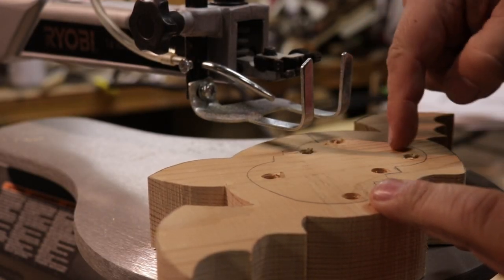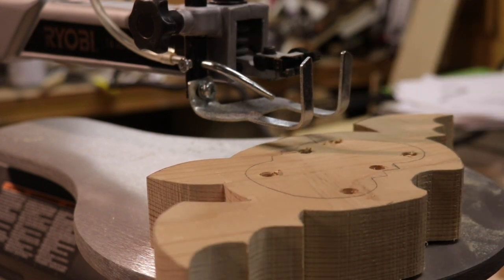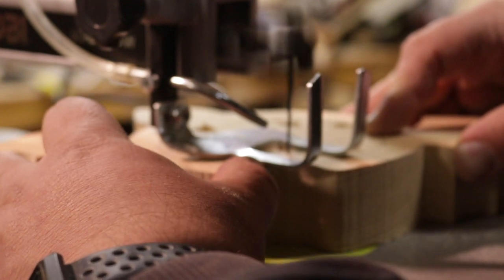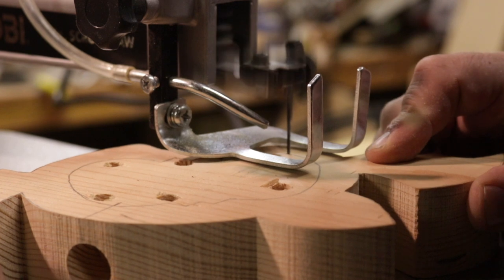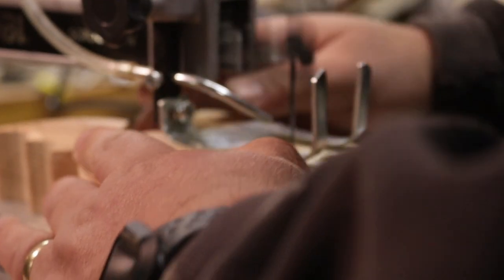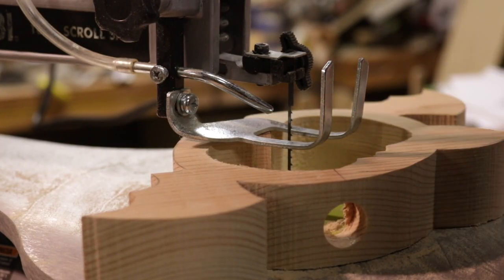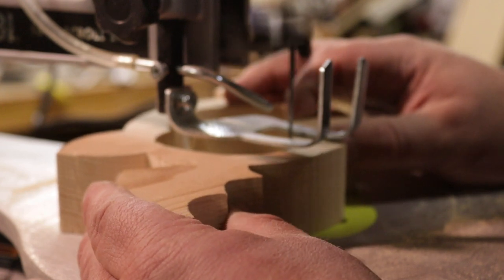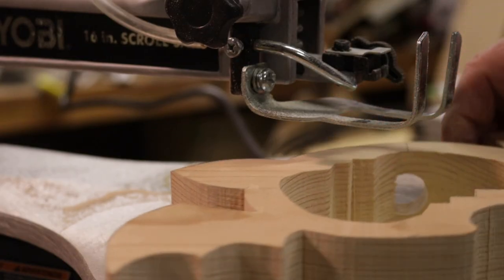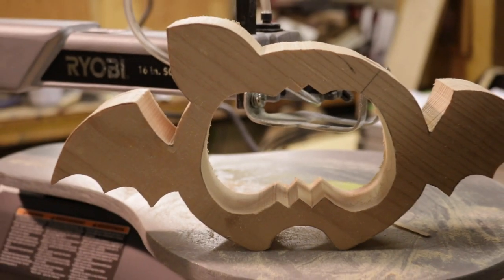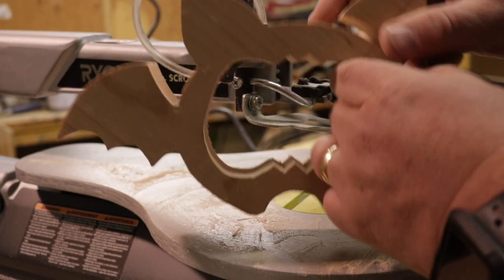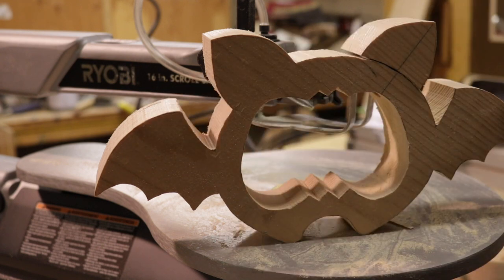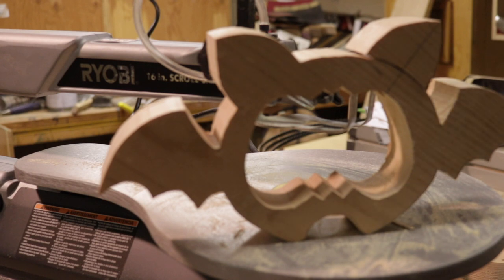Alright, so with the bat cut out, I drilled a few holes in here so that I can drop the scroll saw blade through. Got the main piece out so now I'm just going to clean up some of these corners. There's the bat with his ear. So now I'm probably going to sand some of these edges and round over the corners just to make it a little more smooth to the touch. And then once it's sanded, we'll be ready to paint.